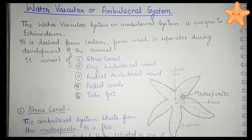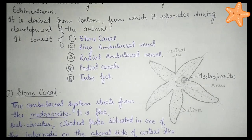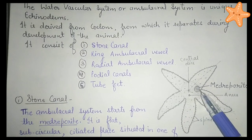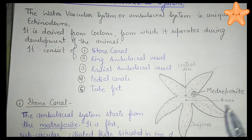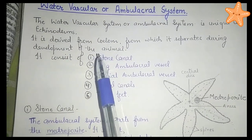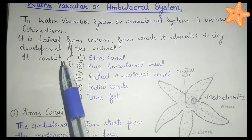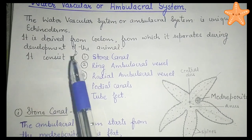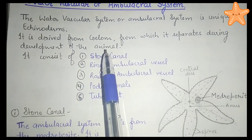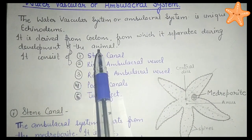Here we can see the diagram of the starfish representing its five arms and the central disc. We can see the spines are present, and here is a structure known as the madreporite. This water vascular system is somewhat similar to the canal system of sponges, but both are different and unique to their own phylums. This system is derived from the coelom, from which it separates during the development of the animal.